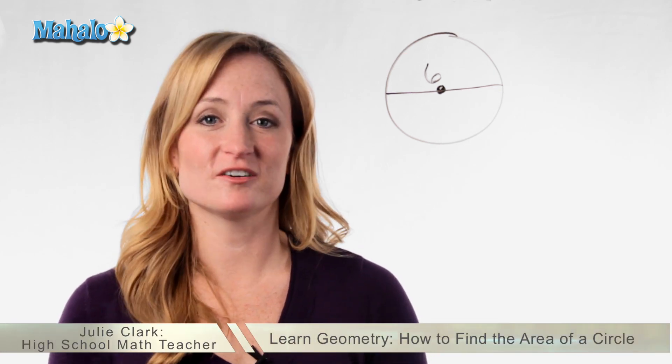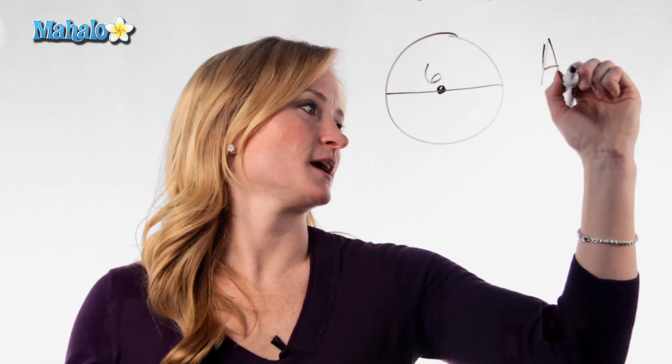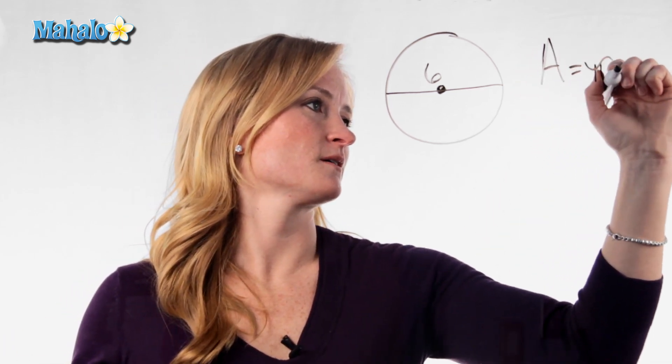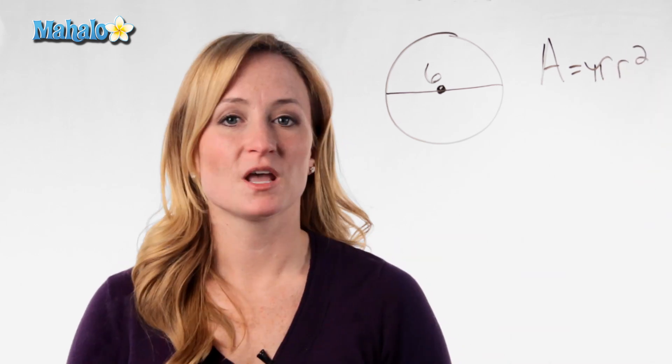Hey, this is Julie with Mahalo.com, and today I'm going to teach you how to find the area of a circle. The formula for the area of a circle is A equals pi radius squared.